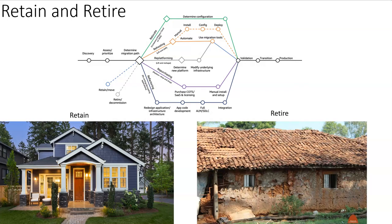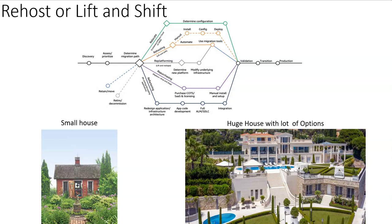The next strategy is Rehost, also known as Lift and Shift. In the real life example, assume you have a small house but your needs are growing — you're purchasing furniture, electronics like a refrigerator, and all those things that won't fit in the small house. If you are financially capable, you will try to purchase or rent a bigger house where your family can fit comfortably. Similarly, assume you have a small data center but your requirements are growing day by day in terms of scaling — your traffic is growing and your data center can't fulfill those requirements.